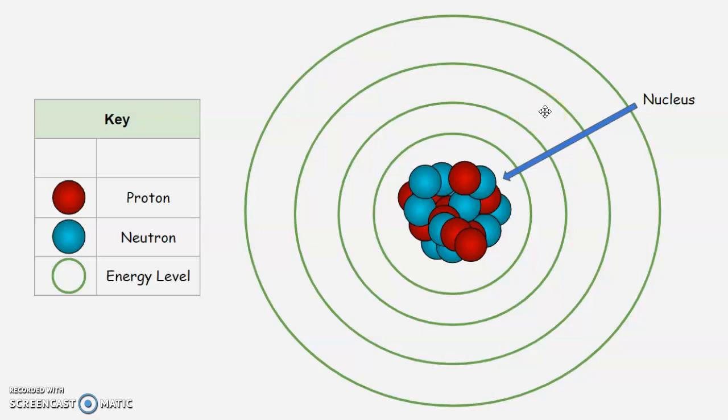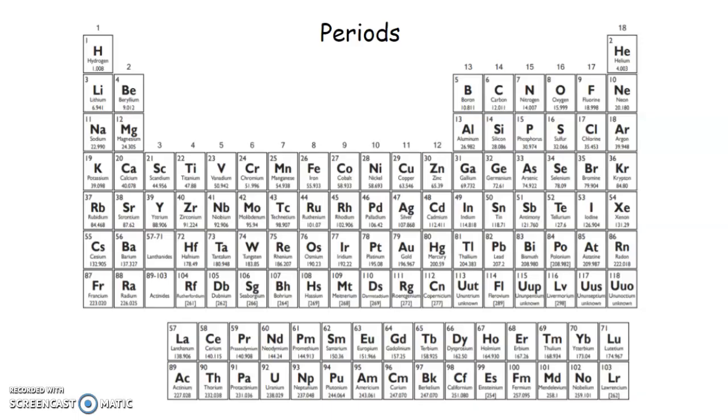But for our purpose, we're going to call them energy levels. How do we determine the number of energy levels? Well, you need to look at the periodic table and look at the periods. And periods are just a fancy word for rows.